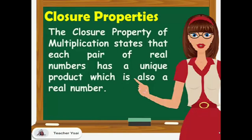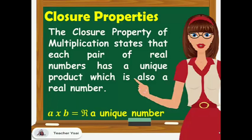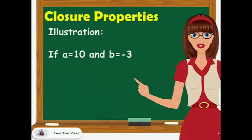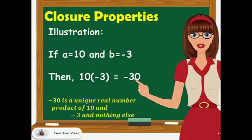Next, we have the closure property of multiplication, which states that each pair of real numbers has a unique product, which is also a real number. We have a times b equals r, where r is a real number and a unique number. For illustration, if a equals 10 and b equals negative 3, then 10 times negative 3 is negative 30. Negative 30 is a unique real number, which is the product of 10 and negative 3 and nothing else.